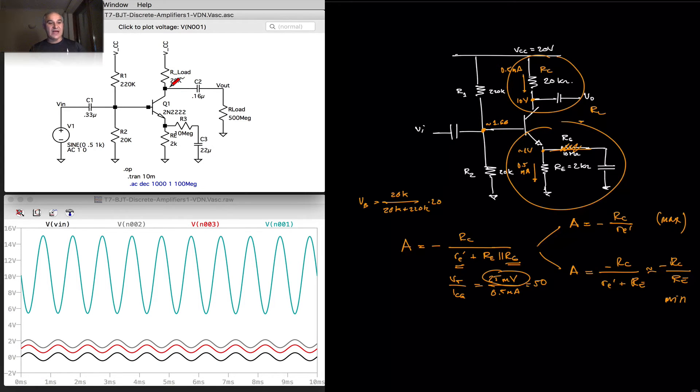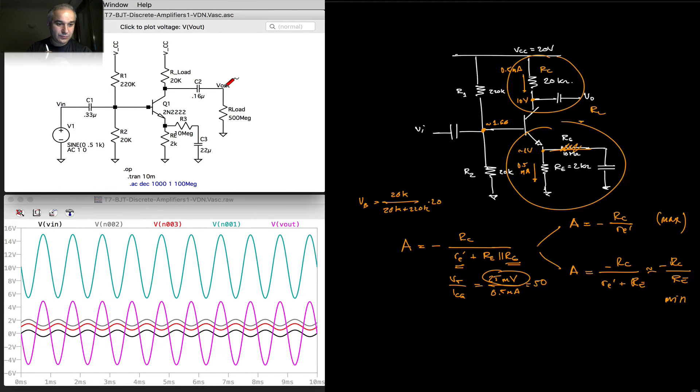So, at 10 volts, we have a signal with a gain of 10, and if it goes to the coupling capacitor, now it will be centered at 0 and delivered to the load. So, we have a 0.5 volts input, and we get a 5 volts output. This is what we expected.